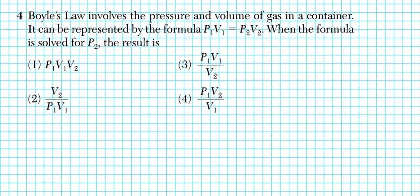Let's take a look at question 4. It reads: Boyle's law involves the pressure and volume of gas in a container. It can be represented by the formula P1V1 equals P2V2. We're asked to solve for P2. P1, V1, P2, V2 are all variables with indices. To get P2 isolated, ask yourself what operation connects P2 and V2 — that's multiplication. The inverse of multiplication is division.